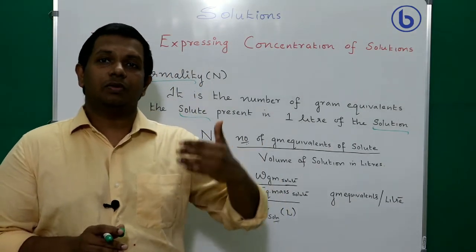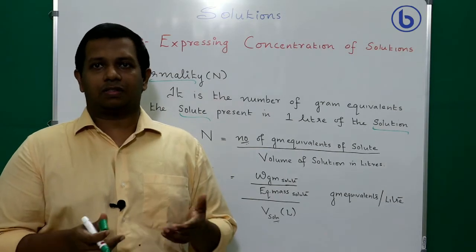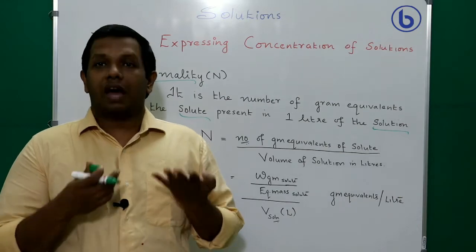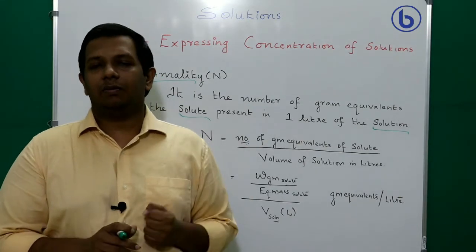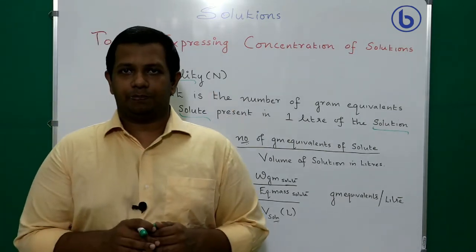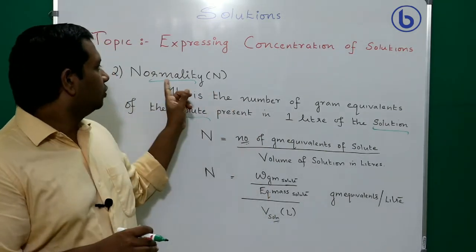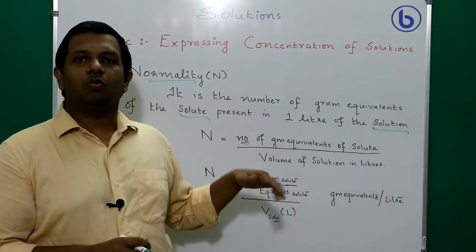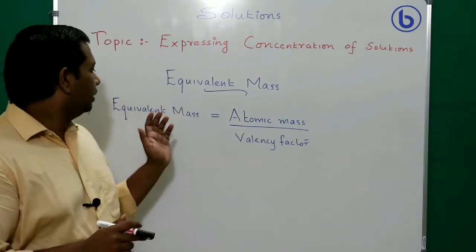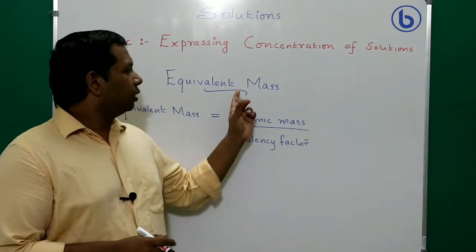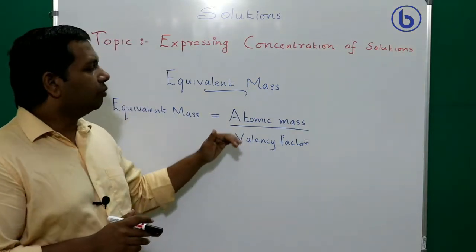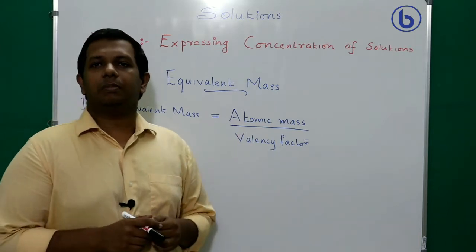Next, we will understand how to find the equivalent mass of various substances — elements, acids, bases, ions, and others. Once you can find the equivalent mass, finding normality becomes straightforward. I will go through various formulas rather than the definition of equivalent mass.